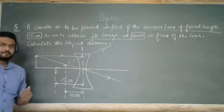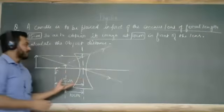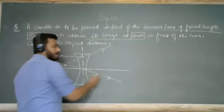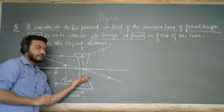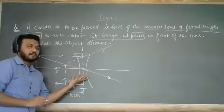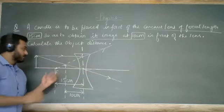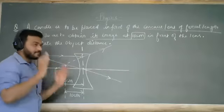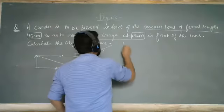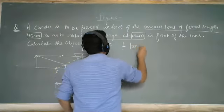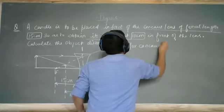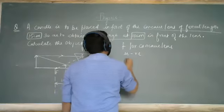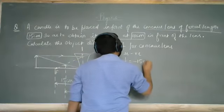Now, how does the concave lens work? The focus is on both sides for a concave lens. This is a very important point. For a concave lens, the focus is negative, so the focal length F is minus 15 cm.